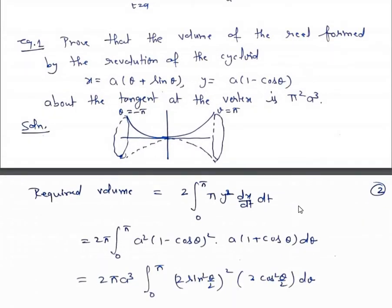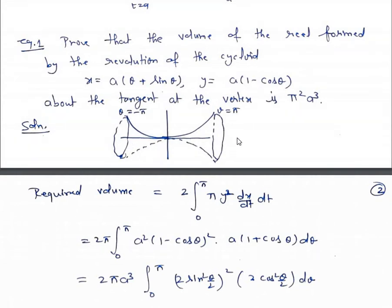Let's take a few examples. First example: prove that the volume of the reel formed by the revolution of the cycloid x = a(θ + sin θ), y = a(1 − cos θ) about the tangent at the vertex is π²a³. The tangent at the vertex is the x-axis, so we revolve this cycloid about the x-axis.